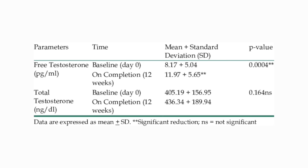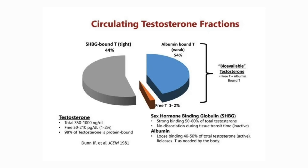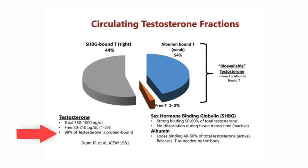When you look at testosterone levels in the body, it is usually characterized in one of two primary ways. You have total testosterone, which is the total amount of measurable testosterone in the bloodstream at any particular time. And then you have free testosterone, which is defined as the amount of your total testosterone that is unbound by one of two carrier proteins known as albumin and SHBG. At any given moment, roughly 98% of your total testosterone can be bound by one of these two proteins, meaning only 2% is typically considered free and unhindered to act on androgen receptors.